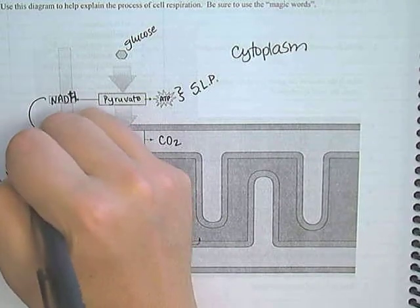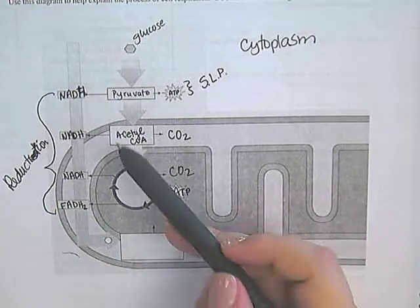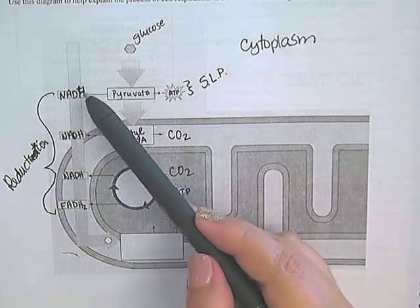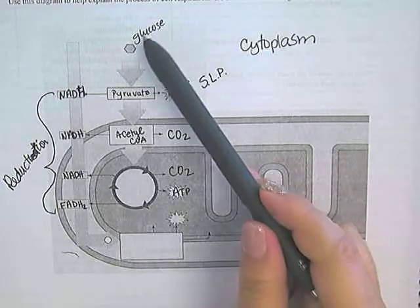All of these processes right here were reduction. That reduction means that it's gaining that electron plus gaining that hydrogen as well, but the reduction is gaining the electron and they're gaining it from the breakdown of these substrates in these reactions.